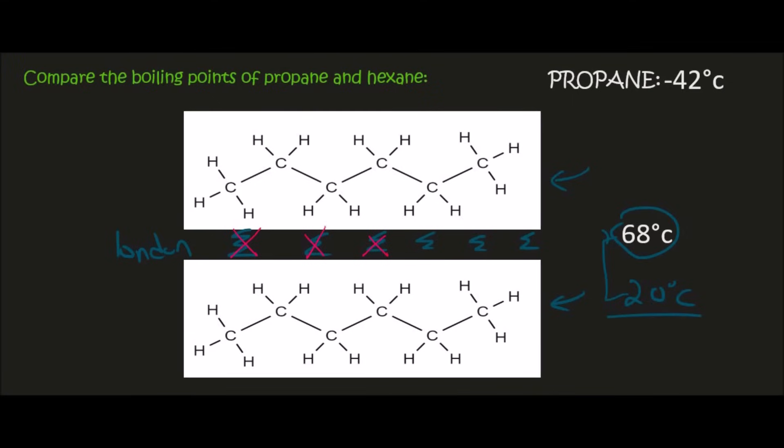So in this video, we looked at propane and hexane, and we saw that both of them have London forces for their intermolecular forces. However, hexane has a higher boiling point. Because it's a longer molecule, there is more area for the London forces to act upon. And so more energy is needed to overcome all of those forces. And so the boiling point is higher.